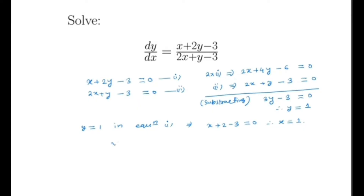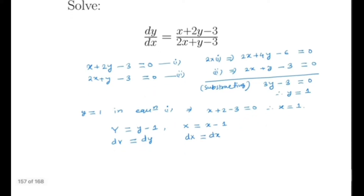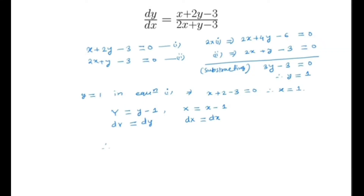Now we make a substitution: capital Y = y - 1 and capital X = x - 1. Then we know that dY is the same as dy and dX is the same as dx.